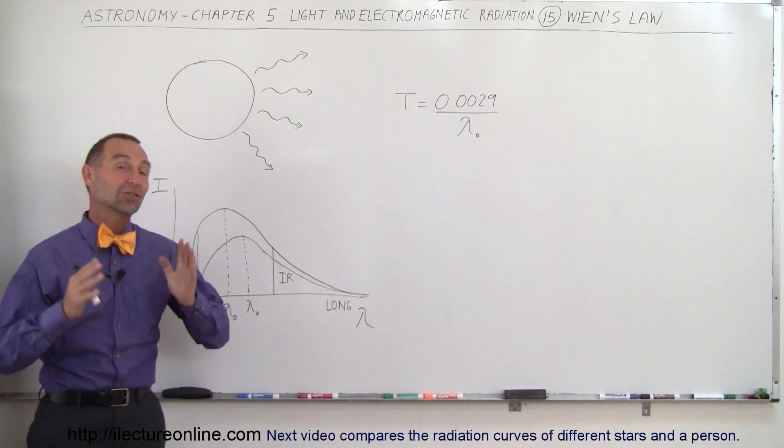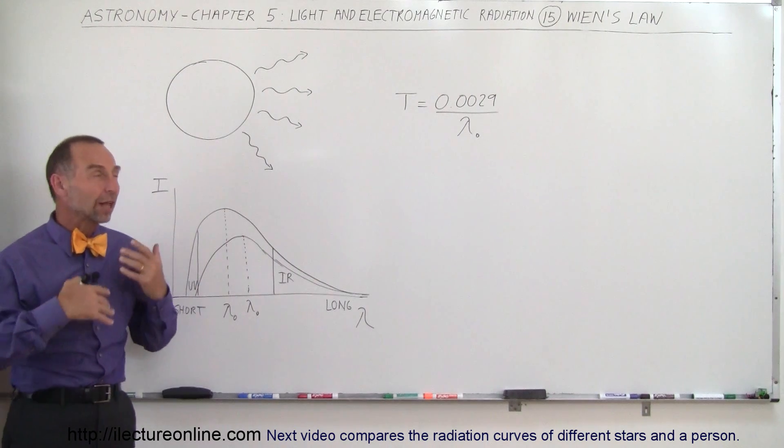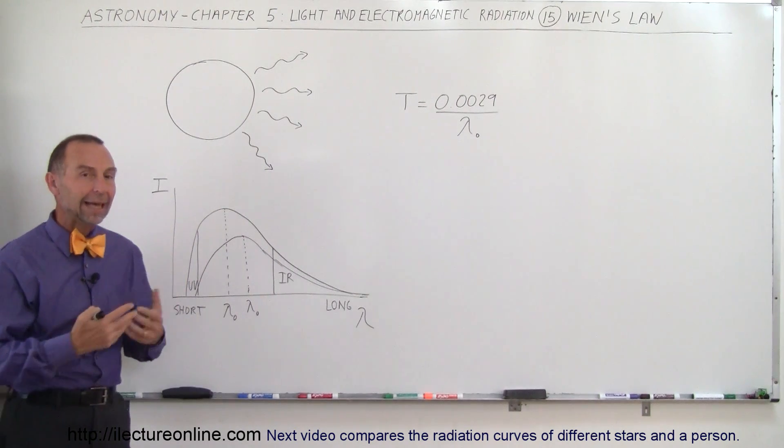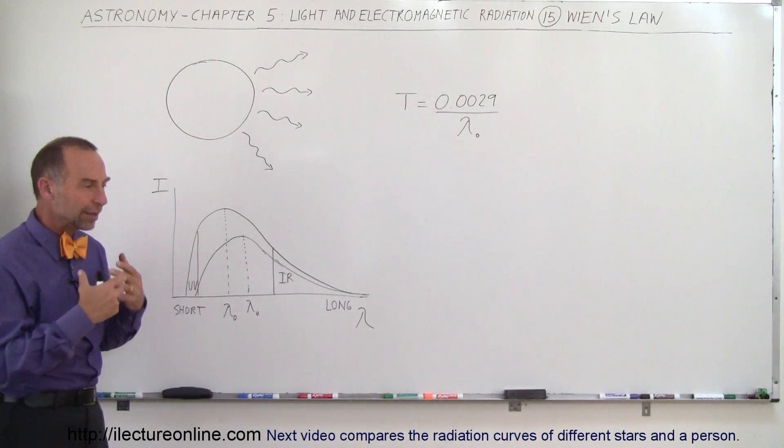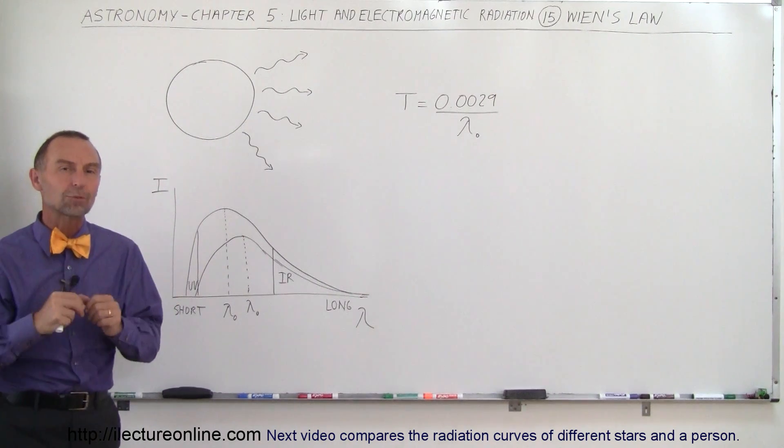Welcome to Electronline and now let's talk about Wien's law. Wien was a famous physicist who did a lot of study in radiation and the temperature of objects that radiate out energy, and he found a relationship between the kind of radiation coming from an object and its temperature.